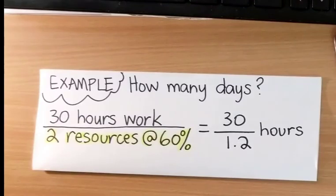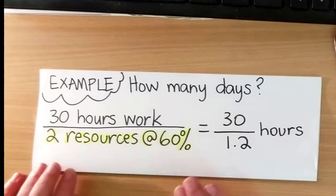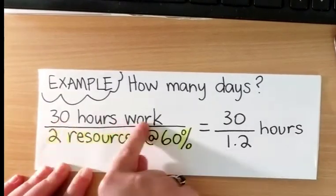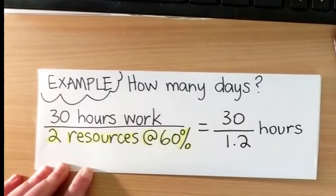So let's do an example of trying to find out the duration. How many days will this task take? We're told three pieces of information. We're told that the work is 30 hours, an estimate.